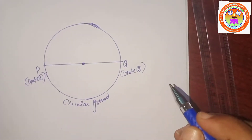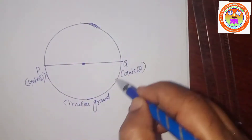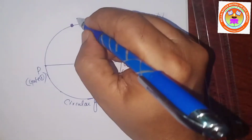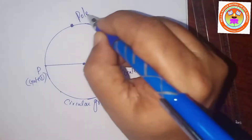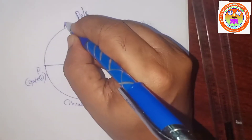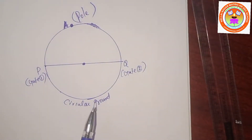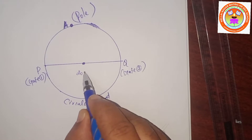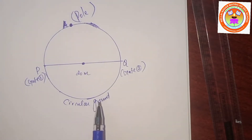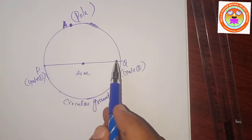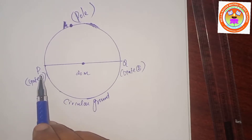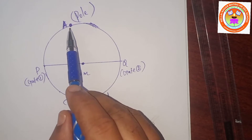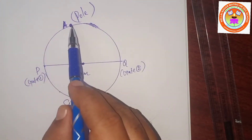According to this question, a pole has to be erected on the boundary of the circular ground. Anywhere on the circular ground — I take a pole here. I consider the pole as A. The circular ground has diameter 20m. At the end points of the diameter, two gates are there: gate number 1, which I consider as P, and gate number 2, which I consider as Q. I join P to A and Q to A.